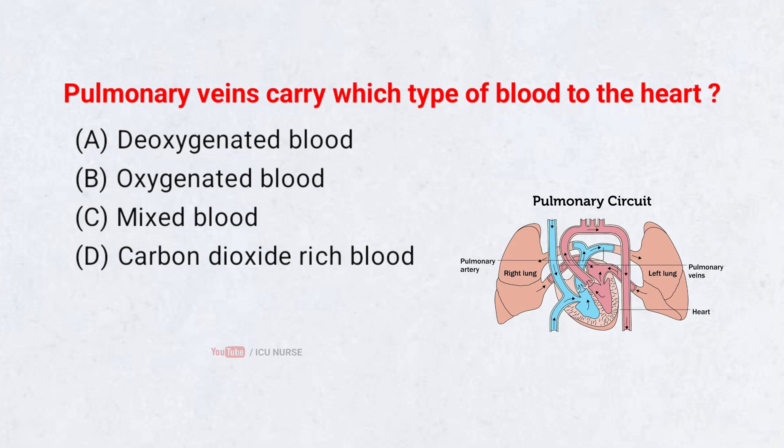Pulmonary veins carry which type of blood to the heart? Correct answer B: Oxygenated blood.